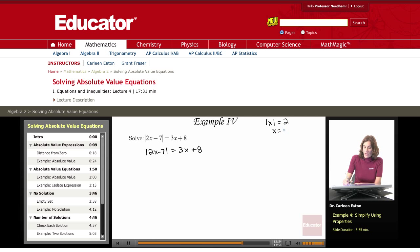If the absolute value of x is 2, x equals 2 or x equals negative 2. So I do the same thing here. I get rid of the absolute value bars, and this is my positive permutation. And then I also have 2x minus 7 equals negative 3x plus 8.